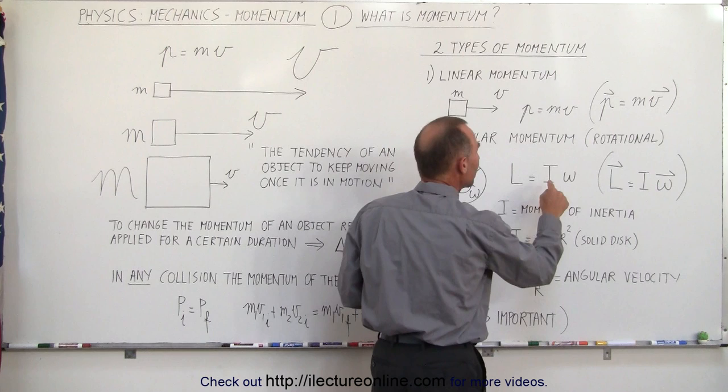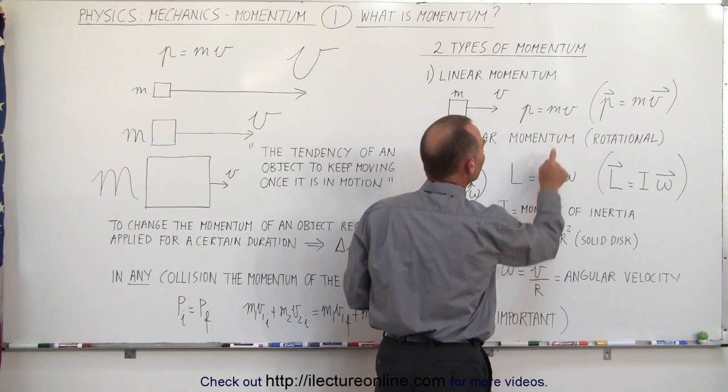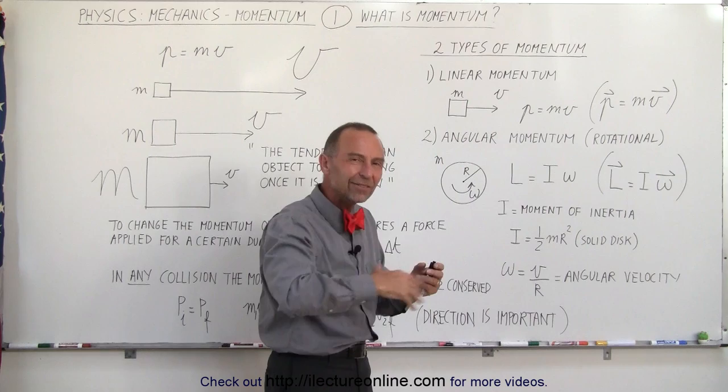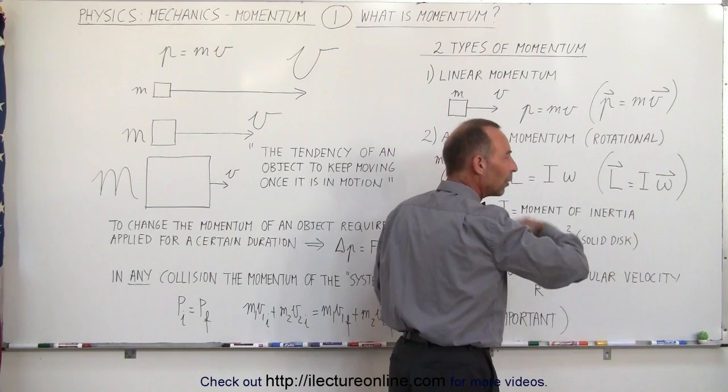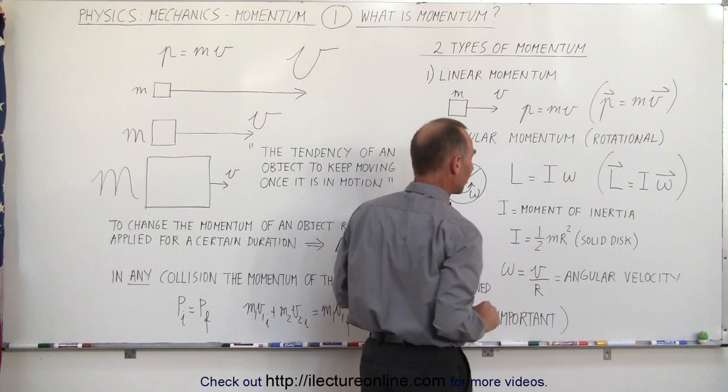Angular momentum is the product of the moment of inertia times the angular velocity. Notice a similarity: instead of using mass, we use moment of inertia, which has something to do with how easy it is for an object to be rotating. And omega, of course, is the angular velocity—the way we express how fast something is rotating. The faster it's rotating, the larger the angular velocity.